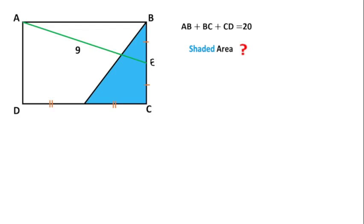Welcome to Definite Mind. In this question, ABCD is a rectangle and the length of AE is 9 units, and E is the midpoint of BC.